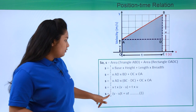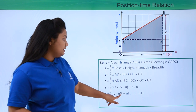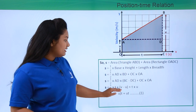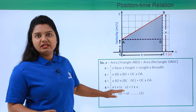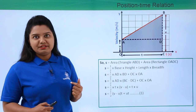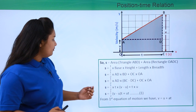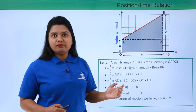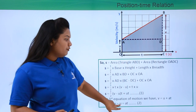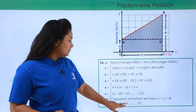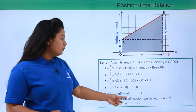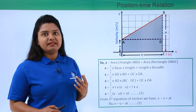So s equals half times (v minus u) times t plus ut — we will call this equation 1 and use it later in the derivation. From the first equation of motion we know that v equals u plus at, so v minus u equals at. We will take this as equation 2, and we will use both equations in the process of derivation.